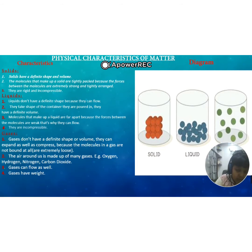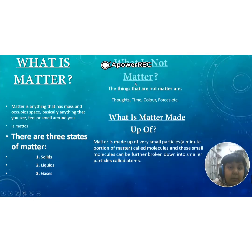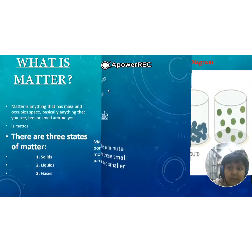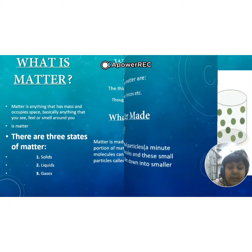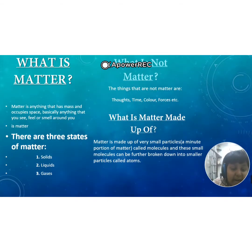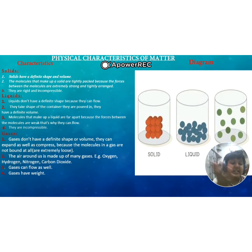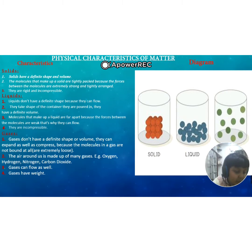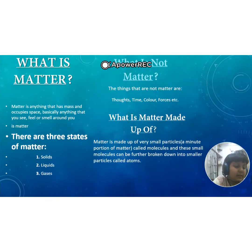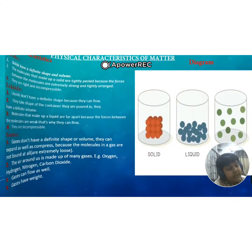Now, what is not matter? The things that are not matter are thoughts, time, color, forces, etc. Thoughts, for example — it's an abstract thing. Abstract means we can't see it, we can't sense it with our five senses. We can't see it, we can't touch it, we can't feel it.